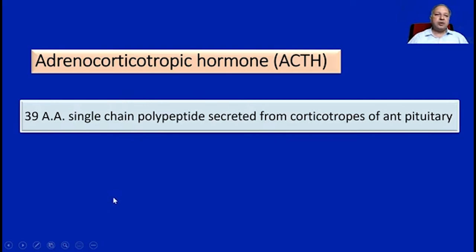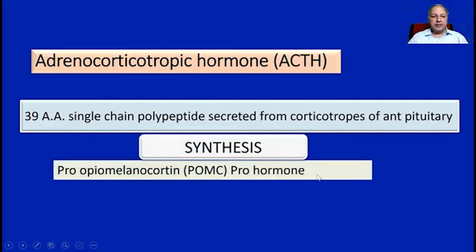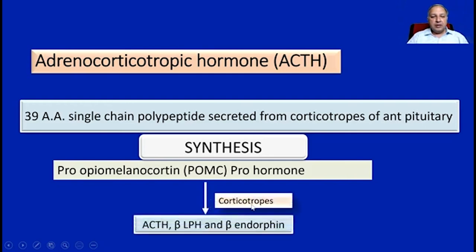Coming to the next hormone: adrenocorticotropic hormone or ACTH. It is a 39 amino acid single-chain polypeptide secreted from the corticotropes of the anterior pituitary. It is synthesized from the pro-opiomelanocortin POMC pro-hormone, which in the corticotropes is metabolized to ACTH, beta-LPH, and beta-endorphin, with ACTH being the main product.